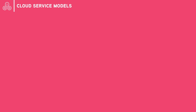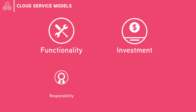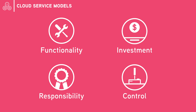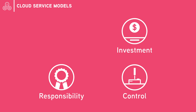However, despite these similarities, the three cloud service models have a few significant differences, including level of functionality, investment, responsibility, and control for the user organization. Before you purchase a cloud service, it's important to understand the unique characteristics of each model and how to apply them to your procurement decision. In the next three lessons, we'll take a look at those differences and explain how to use those distinctions to make the right cloud service choice for your agency.